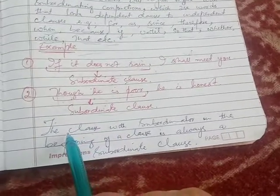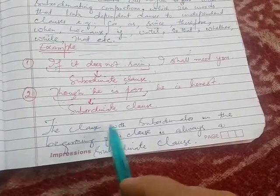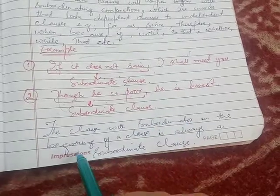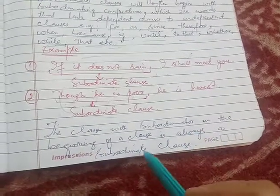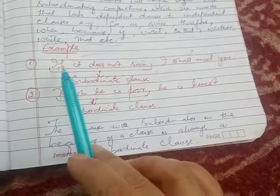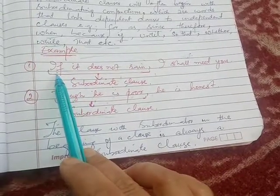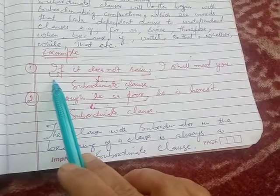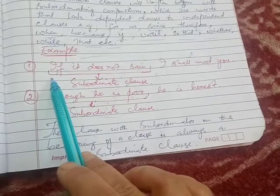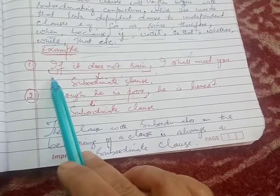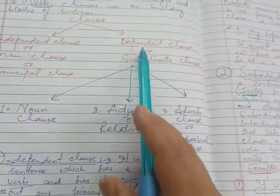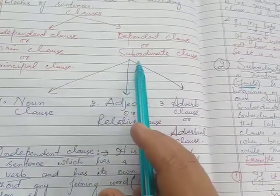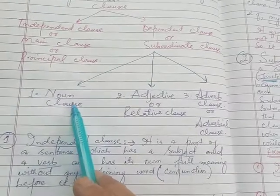Remember this important point: a clause with a subordinator at the beginning is always a subordinate clause. When a clause begins with a subordinator, it is a subordinate or dependent clause. The dependent or subordinate clause is divided into three important types: noun clause, adjective or relative clause, and adverb clause or adverbial clause.